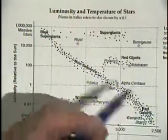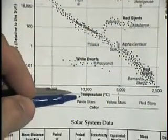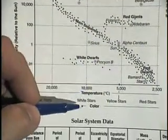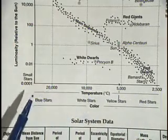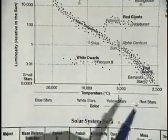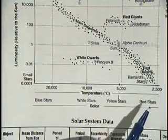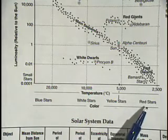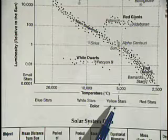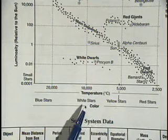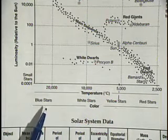And of course, we have the red dwarfs here. Now, temperature is directly related to color. Notice, the hotter you go, the color changes. Really cool stars happen to be red. Then yellow for warmer. Hotter stars are white. The hottest are blue.